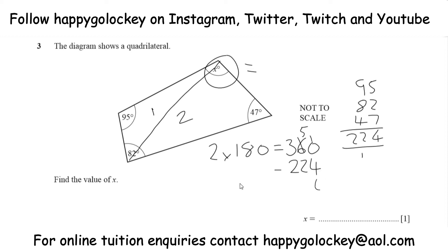A little bit of column subtraction here. 10 take away 4 is 6, 5 take 2 is 3, 3 take 2 is 1. That gives us 136 degrees — the missing angle today is 136 degrees.